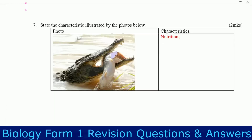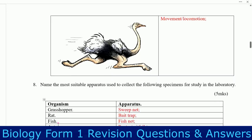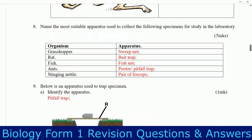Question seven: state the characteristics illustrated by the photo below. Looking at the photo, that characteristic is nutrition. Next, you can see the bird moving very fast — that characteristic is movement or locomotion.